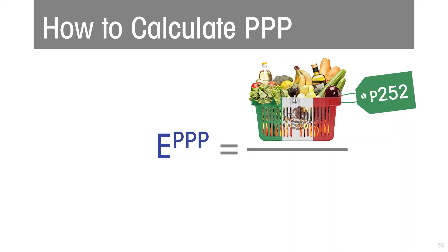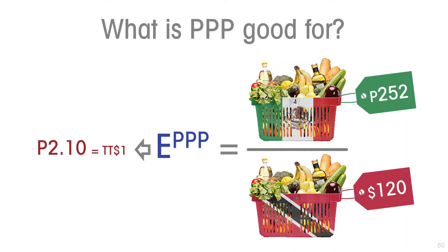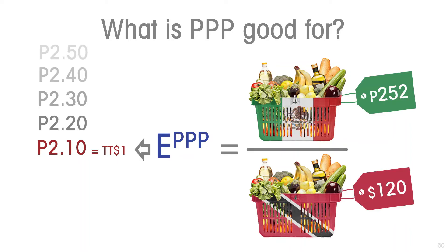Why is that useful? It is useful because if the exchange rate is not at PPP, there exists an arbitrage opportunity, and the exploitation of that opportunity will move the exchange rate towards purchasing power parity. So in this case, if the exchange rate is greater than 2.1, this is an indication that over time the exchange rate is going to fall. Whereas if the current exchange rate is below 2.1, then it's an indication that over time it's going to rise.